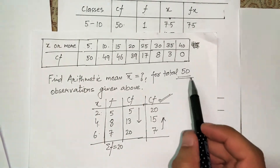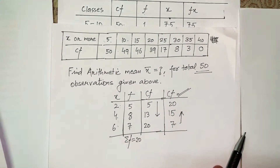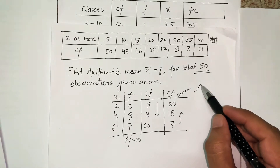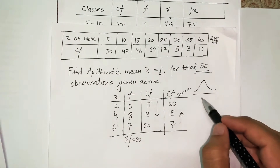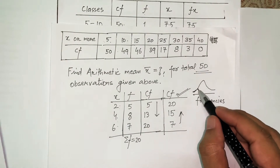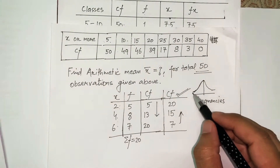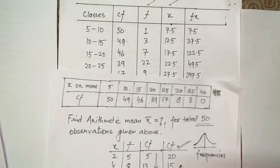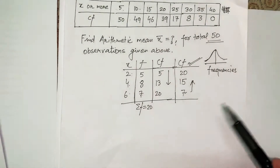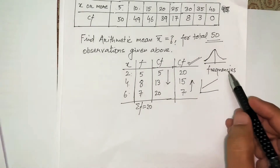To summarize how to spot a cumulative frequency problem: sometimes it is stated directly. Otherwise, you can identify it by the data pattern. Normally, frequencies should be low at the beginning, increase toward the center, and then decrease — forming a bell shape. If you see frequencies in your table that are continuously increasing or continuously decreasing, that is a sign of a cumulative frequency problem.